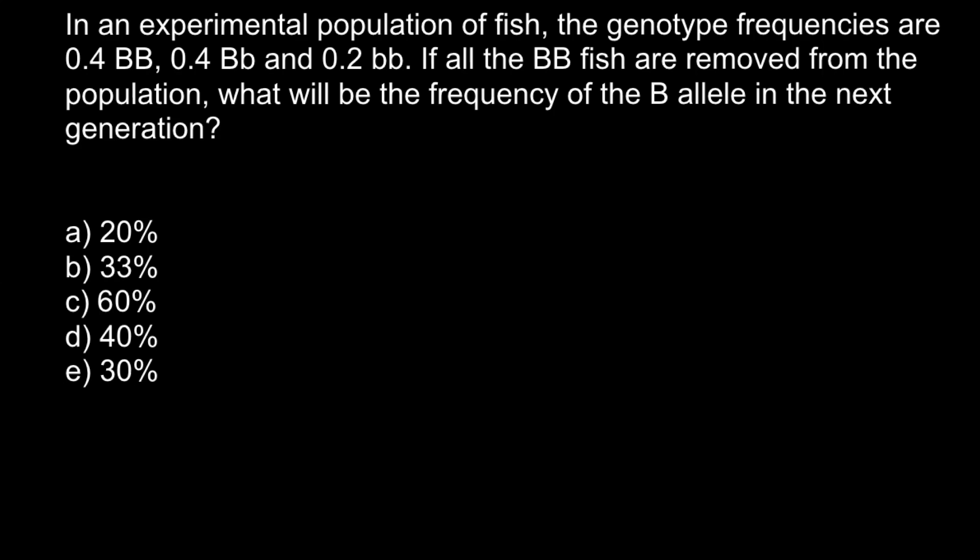Hello and welcome to Nikolai's genetics lessons. Today's problem: in an experimental population of fish, the genotype frequencies are 0.4 homozygous dominant, 0.4 heterozygous, and 0.2 homozygous recessive. If all homozygous dominant fish are removed from the population, what will be the frequency of the dominant allele in the next generation?